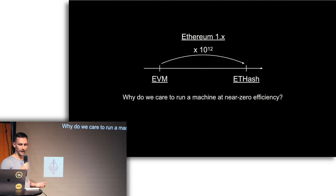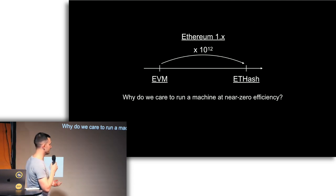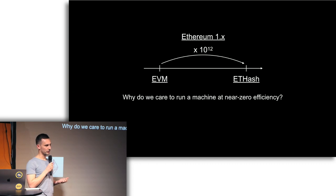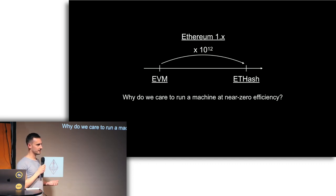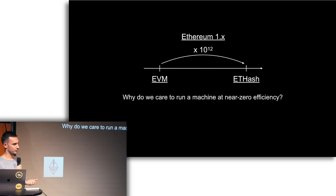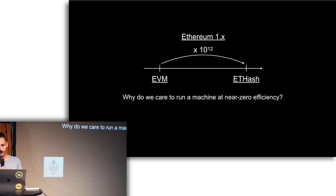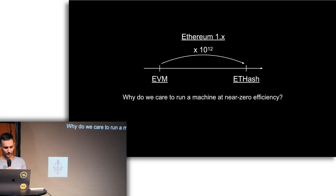If you take a very standard thermodynamic argument, you divide the useful part by all the stuff done, which is still 10 to the 17, you have an efficiency of approximately zero. So the question is, why do we care to run a machine at near-zero efficiency? Apparently we spend millions of dollars a day to keep this running because we mint it and it has a stable value — so we pay off electricity bills. Why do we run the most inefficient machine I can ever think of and keep running it?